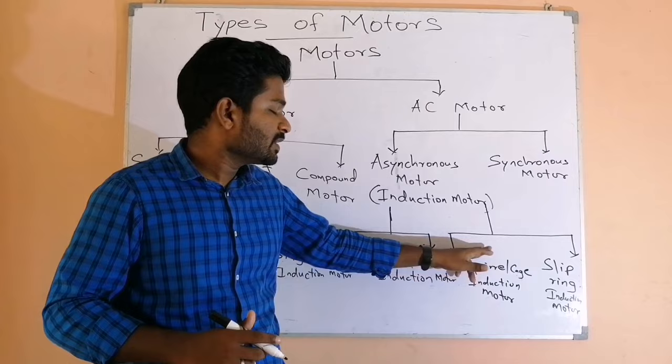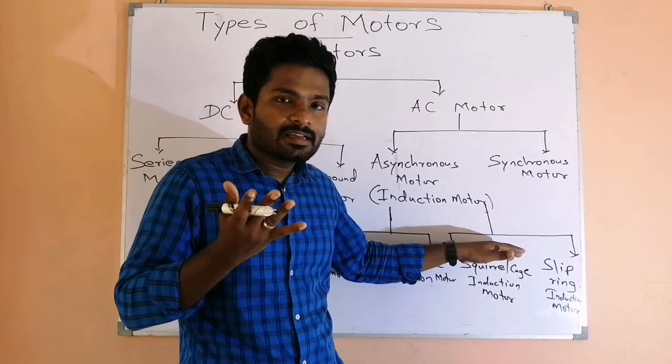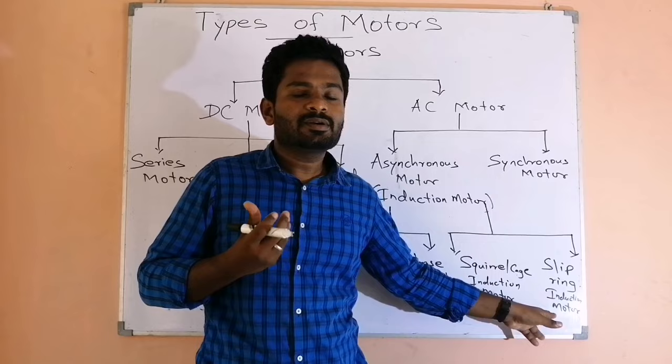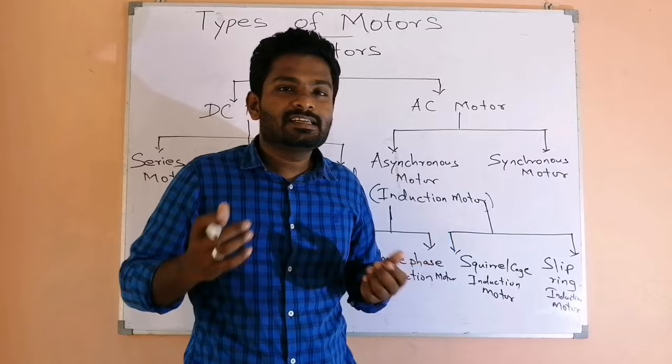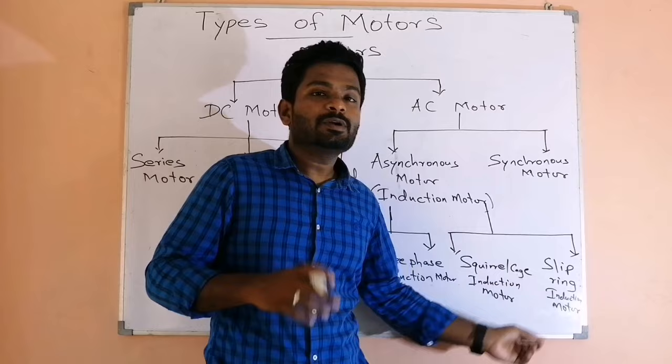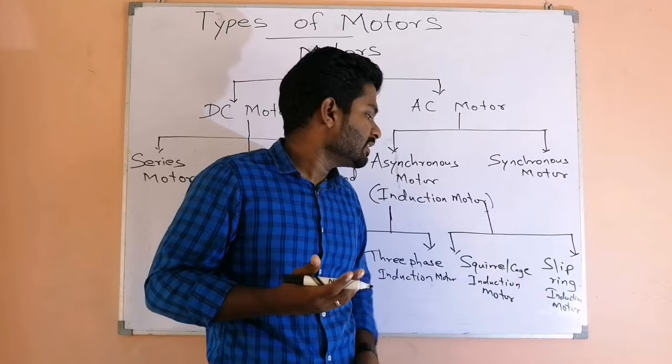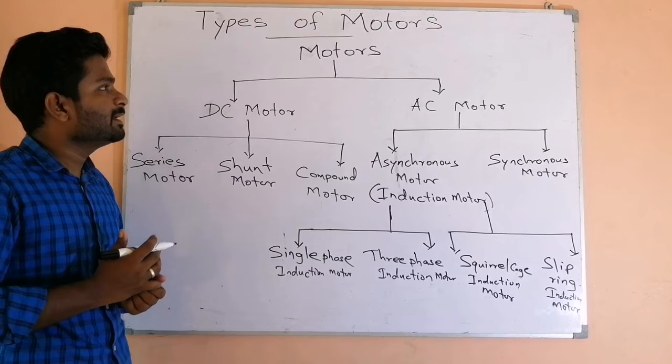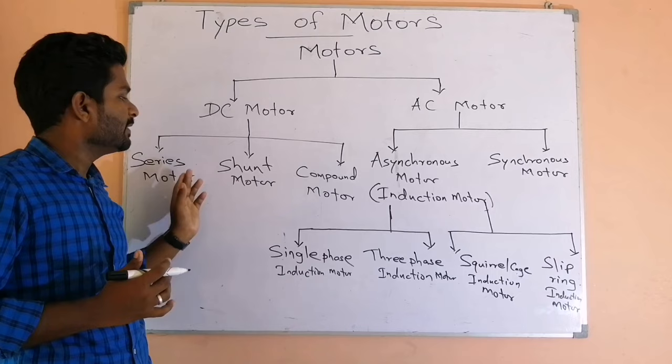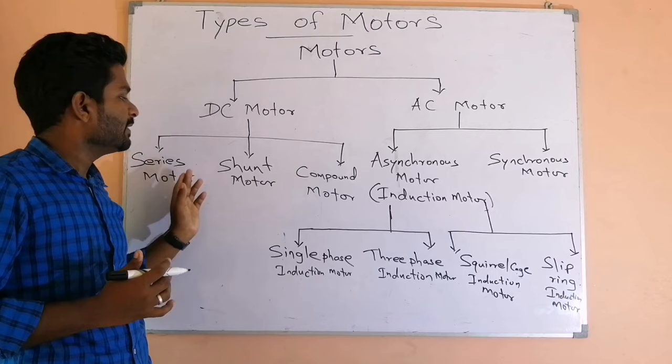One important thing to note about the squirrel cage induction motor is that we don't need to give any electrical supply to the rotor — the rotor works freely. We only need to supply to the stator. This is the special thing about it, and that is the reason for its low cost and low maintenance. So those are the basic types of motors: DC motor and AC motor with their sub-classifications. Thank you for watching, and please subscribe to our channel.